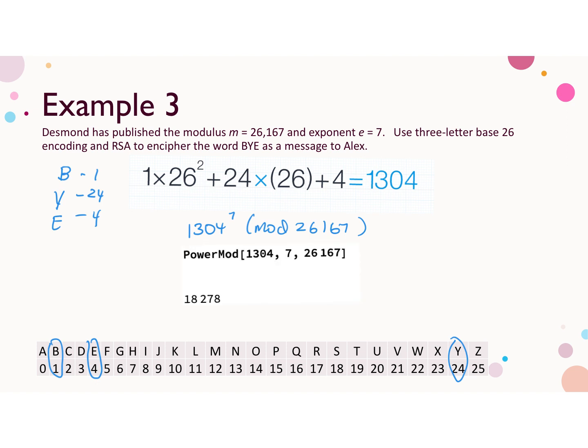In Mathematica, the command I want is power mod, and it's 1304 that I'm raising to the 7th power, mod 26,167, and the result is 18,278. So that's the encrypted message that is sent.